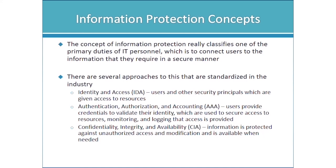The AAA model covers authentication, authorization, and accounting. Users provide their credentials — that's authentication — to validate their identity. Then the system uses those credentials to secure access to resources, and monitoring and logging of that access is provided — that's the accounting piece. When we talk network security, one of the most common acronyms is CIA: confidentiality, integrity, and availability. We need our information protected against unauthorized access, so it needs to be kept confidential — only authorized users should be able to access the data.